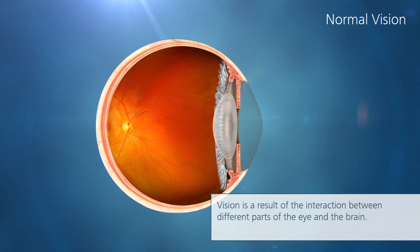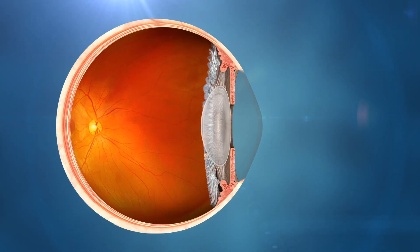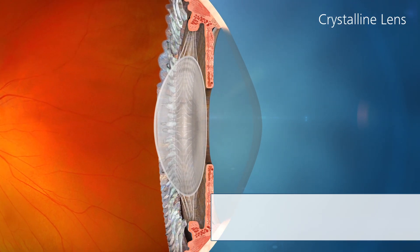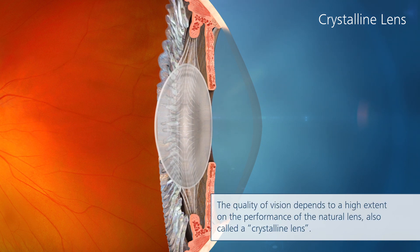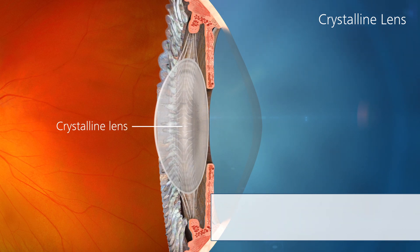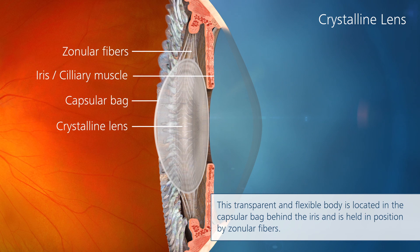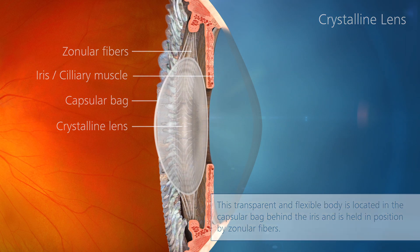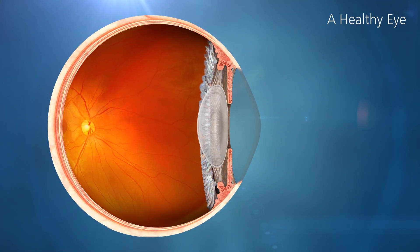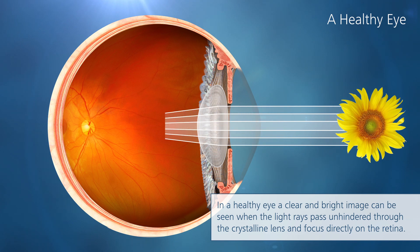Vision is a result of the interaction between different parts of the eye and the brain. The quality of vision depends to a high extent on the performance of the natural lens, also called a crystalline lens. This transparent and flexible body is located in the capsular bag behind the iris and is held in position by zonular fibers. In a healthy eye, a clear and bright image can be seen when the light rays pass unhindered through the crystalline lens and focus directly on the retina at the back of the eye.